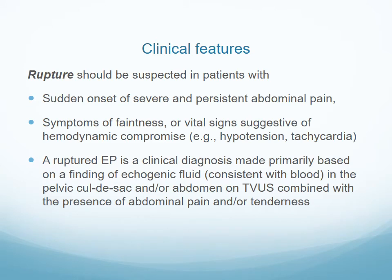Rupture of an ectopic is suspected in patients with sudden onset of severe pain and persistent abdominal pain, and symptoms and signs suggestive of hemodynamic compromise — for instance, hypotension, tachycardia, dizziness, or faintness. A rupture is a clinical diagnosis made primarily based on findings of free fluid in the pouch of Douglas, combined with the presence of abdominal pain and tenderness.